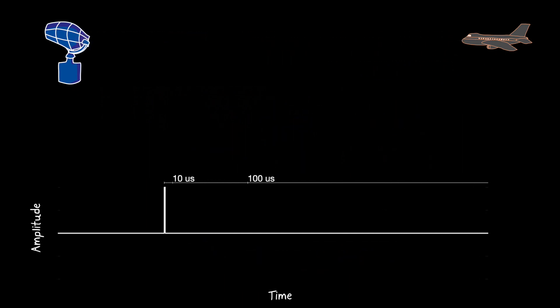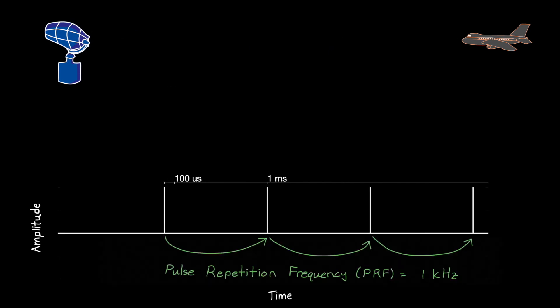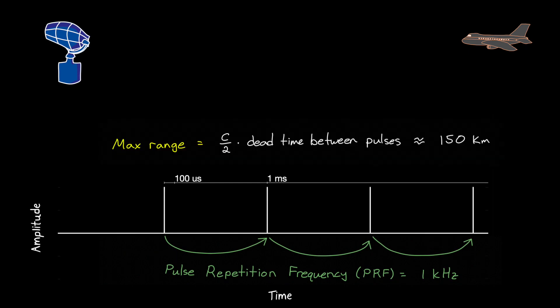Here, I'm sending out a pulse every 1 millisecond, or with a pulse repetition frequency, or PRF, of 1 kilohertz. The max unambiguous range for this system, given a PRF of 1 kilohertz and a pulse width of 1 microsecond, is just under 150 kilometers.